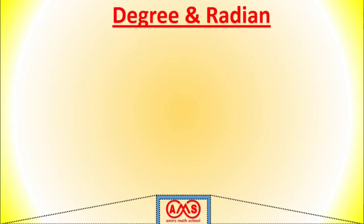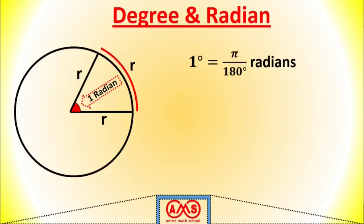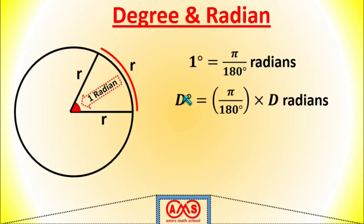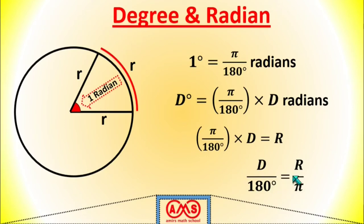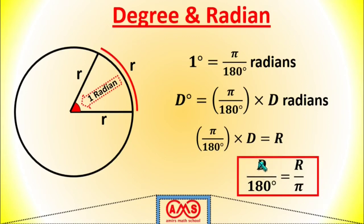Let's simplify the degree and radian relation. We know 1 degree equals π/180 radians, so d degrees equals (π/180) × d radians. This part is the radian measurement. So we can write π/180 × d = r radians. After simplification, we can write d/180 = r/π. This is the conversion rule between degree and radian, where d is the angle measured in degrees and r is the angle measured in radians.